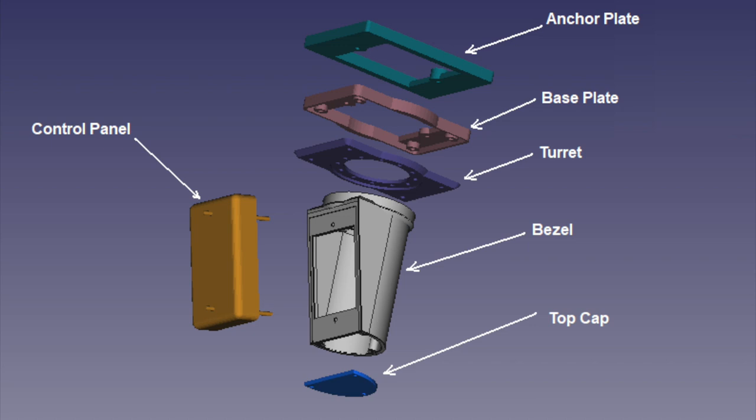The anchor plate is a backing plate that goes in the ceiling and clamps the ceiling in conjunction with the base plate. So essentially it sandwiches the ceiling between those two plates.